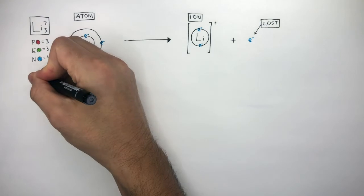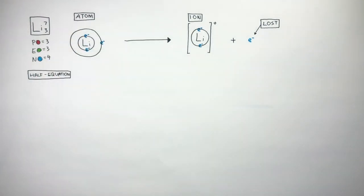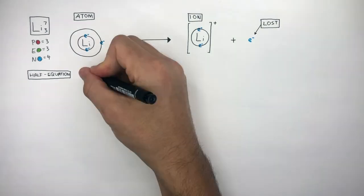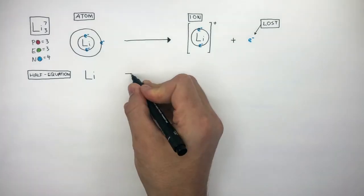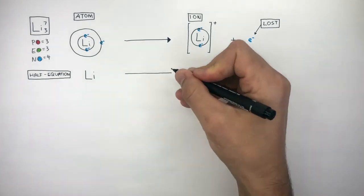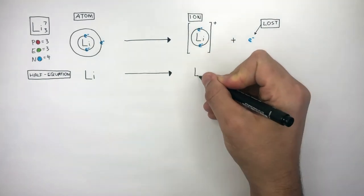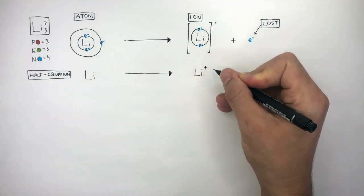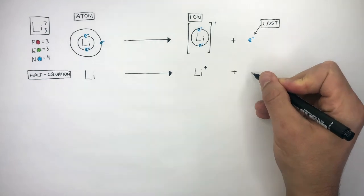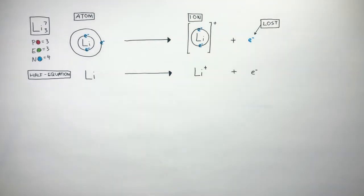We can write a half equation to show how this lithium atom has formed a lithium cation. I write Li to represent the lithium atom, an arrow to show something has happened, Li+ to represent the lithium cation, plus e− to represent the lost electron.